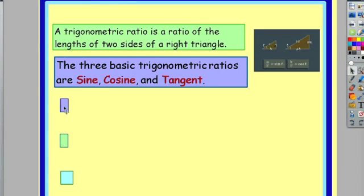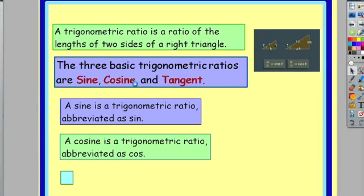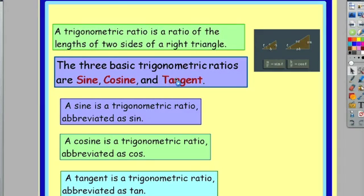You can also use actions to hide and reveal. So now when I click on sine, it pops up with some information of what sine is, cosine, and tangent. Or you click on the answer.